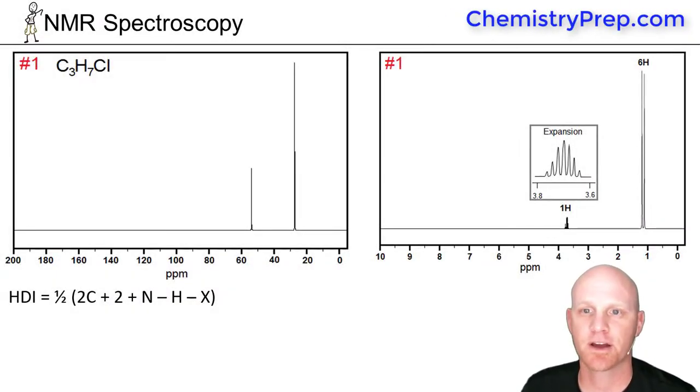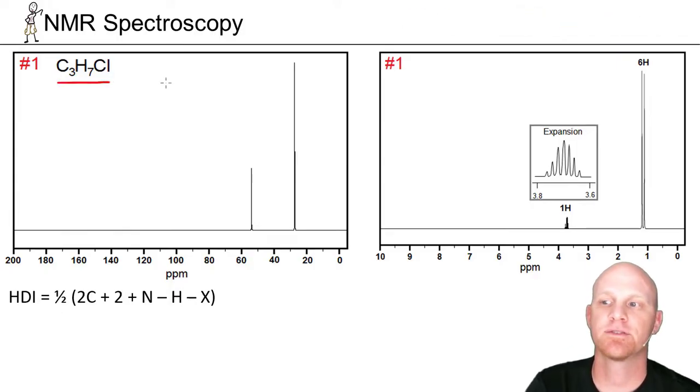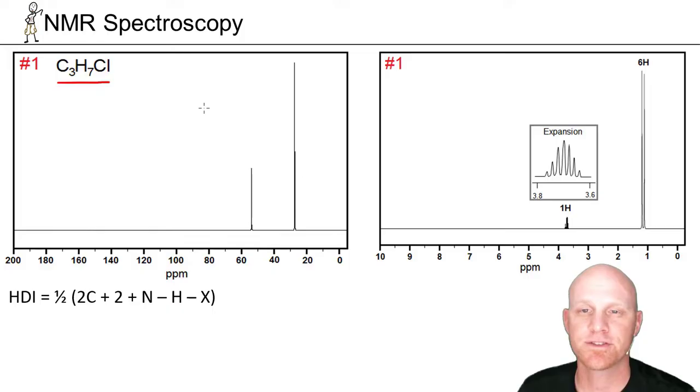So now we're going to actually interpret NMR spectra here. And I'm going to give you a compound here, C3H7Cl. And I've given you both the carbon-13 NMR on the left and the proton NMR on the right. And I want you to actually determine the entire structure from it.